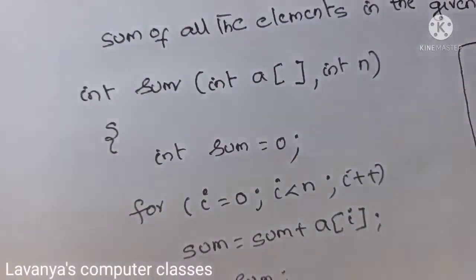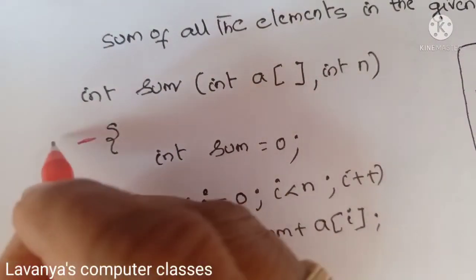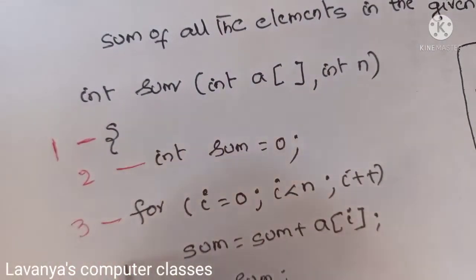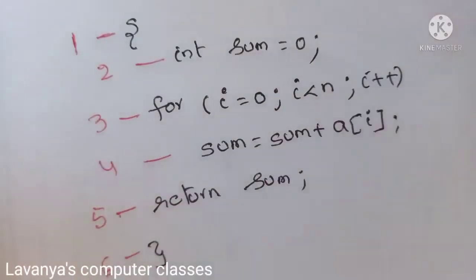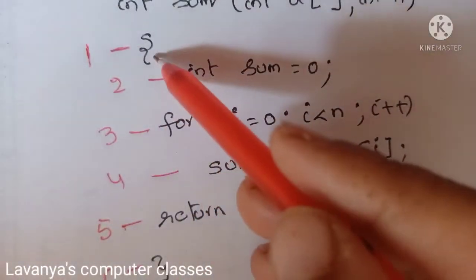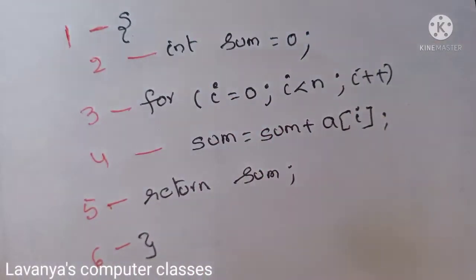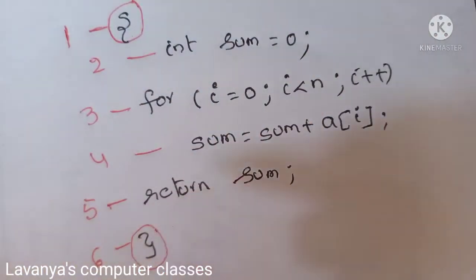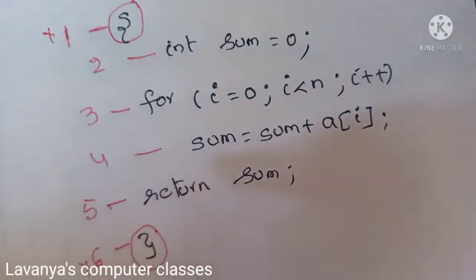First, let's count how many lines there are. The function heading is not counted — counting starts from the first statement. There are six steps in total. The opening and closing curly brackets (step 1 and step 6) do not take any machine time, so they are not considered in the cost calculation.